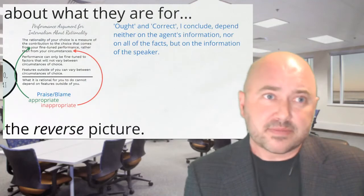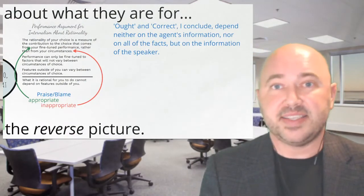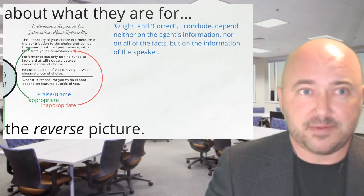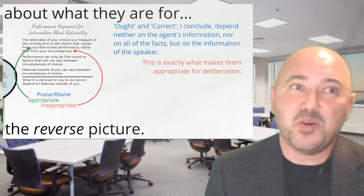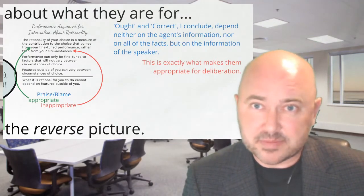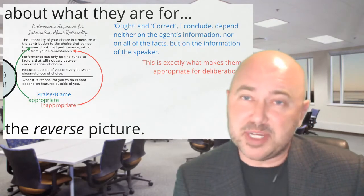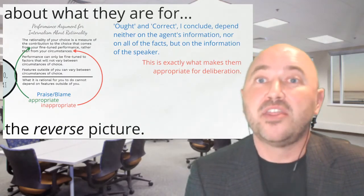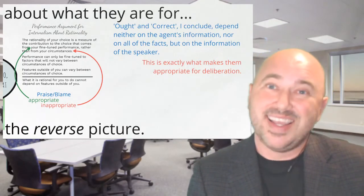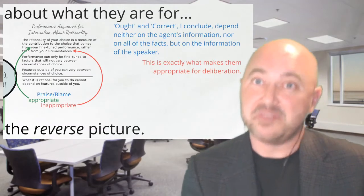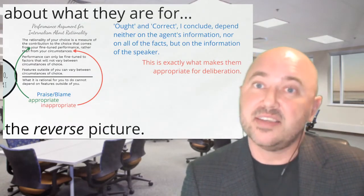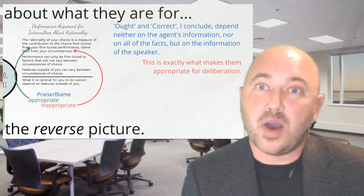So what I've been saying is that 'ought' and 'correct' depend neither on the agent's information nor on all the facts, but on the information of the speaker. And this, I claim, is exactly what makes them appropriate for deliberation. As a speaker, you're not thinking about your own information, nor about anybody else's information, but you are thinking through your information. So if your ought judgments reflect that information in the same way as your decisions — if you're reasoning well — then your decisions will be rational just in case it'll be rational for you to believe that those are decisions you ought to make.